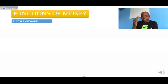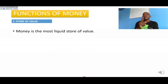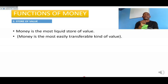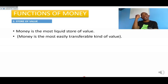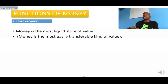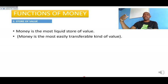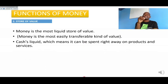Next, money serves as a store of value. Money is the most liquid store of value — it is the most easily transferable kind of value. It's easier to send or transfer money from King Williamstown to Johannesburg in no time. Just pay for the goods, the money is in the account, and the goods are sent to you. Liquid means it can be spent right away on products and services.